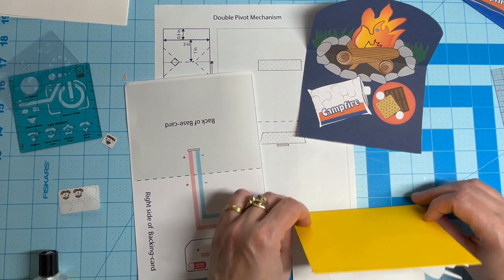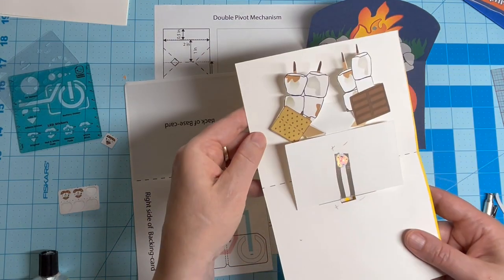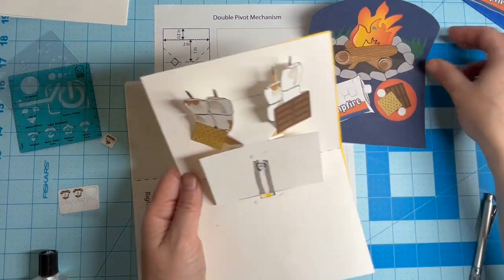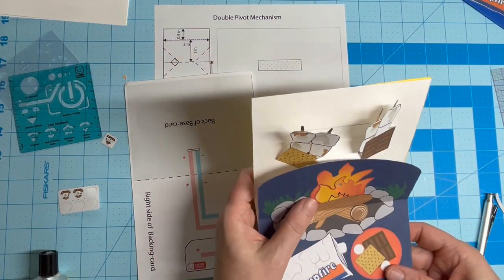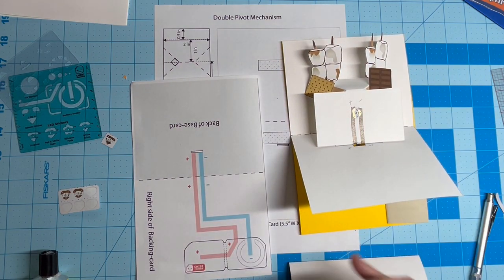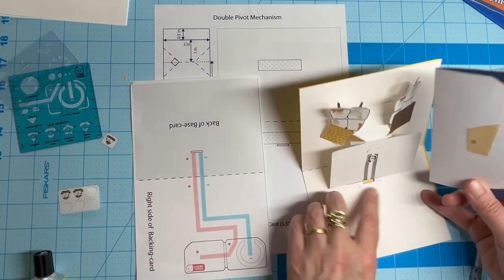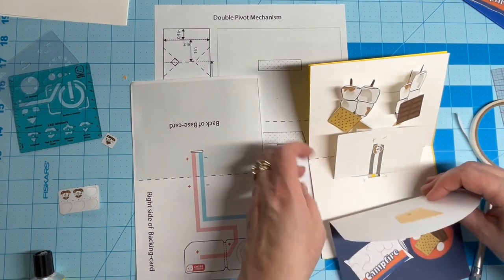If using glue, wait until it's dry before closing the card. Although I did most of this off camera, the last step is to add the decorative mask piece and roasted marshmallow props to the front of the circuit layer.